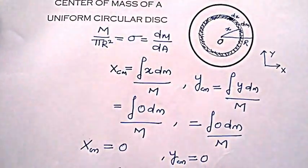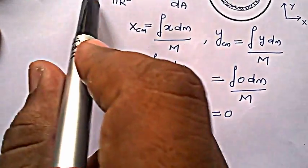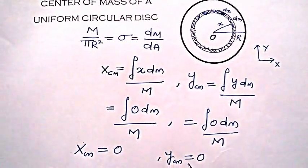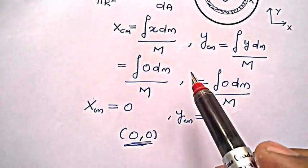So this indicates that the center of mass of a circular disk or uniform circular disk lies at its center, and this is the proof of how it lies at the center. I hope you understand.